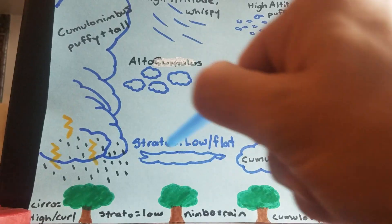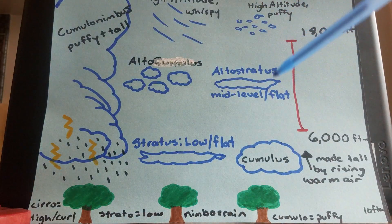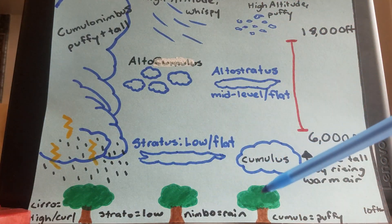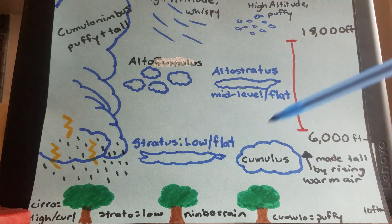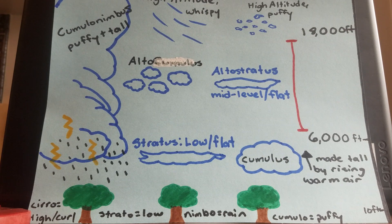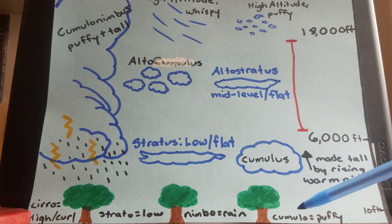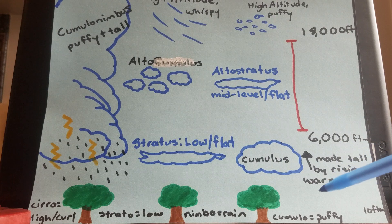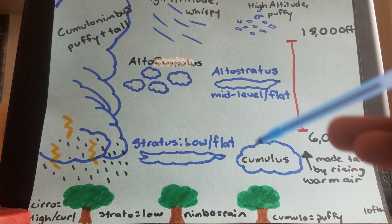Strato, flat, low. You have some middle strato clouds. Nimbo, there's many different types of nimbus clouds all over the troposphere. This just means that they are rain bearing. And then you have cumulo. If you see this prefix, this typically means that it's very puffy.